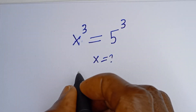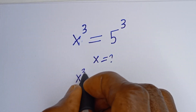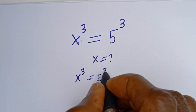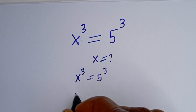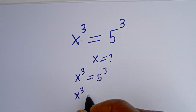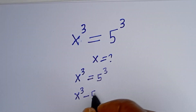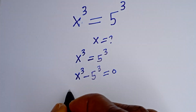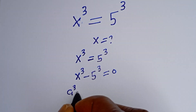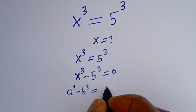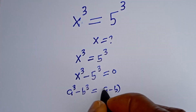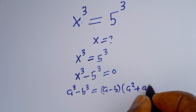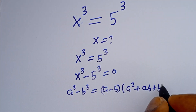We have S to the power of 3 is equal to 5 to the power of 3. If we take 5 to this side, we have S to the power of 3 minus 5 to the power of 3 is equal to 0. Take note that if you have A raised to the power of 3 minus B raised to the power of 3, this is equal to A minus B, bracket A squared plus AB plus B squared.